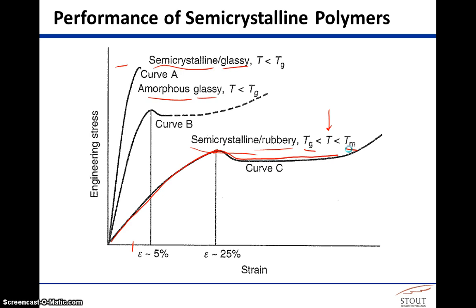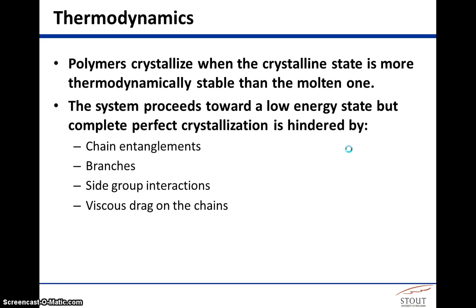So crystallization, why does it occur? Polymers crystallize when the crystalline state is more thermodynamically stable than the molten one. So if the interactions dictate that the most stable conformation for these chains to be in would be a uniformly packed crystal-like material, well, then that's the Gibbs free energy dictating which direction to go. But the system always proceeds towards a low-energy state, trying to minimize that Gibbs free energy or achieve the most negative value for a delta G.